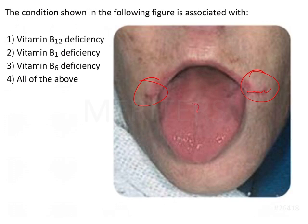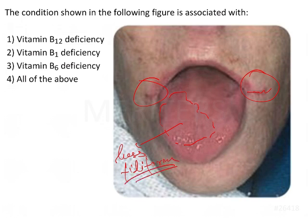At the same time we will be able to appreciate that this particular area, there is loss of papillae actually, and basically this is the area where filiform papillae are found. So loss of filiform papillae is being seen here and that signifies that there is atrophy.